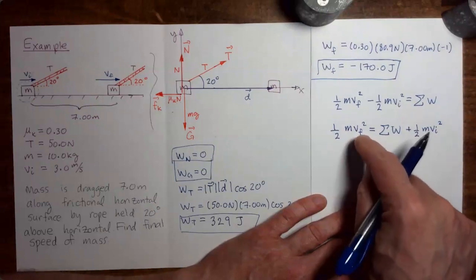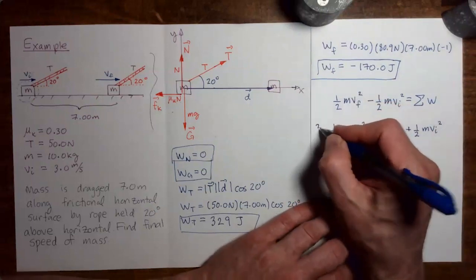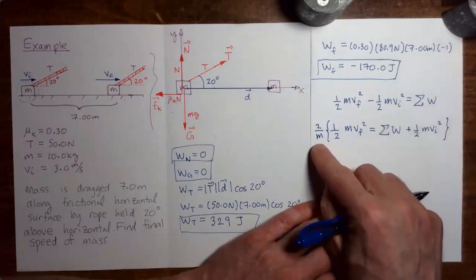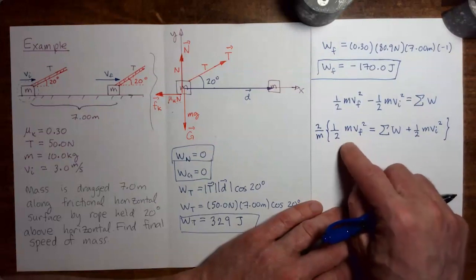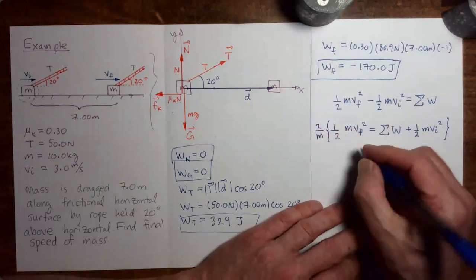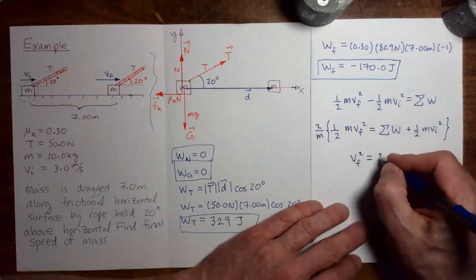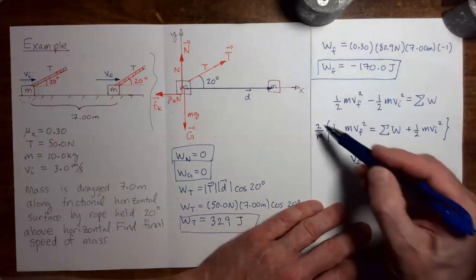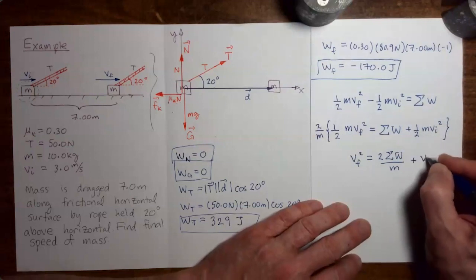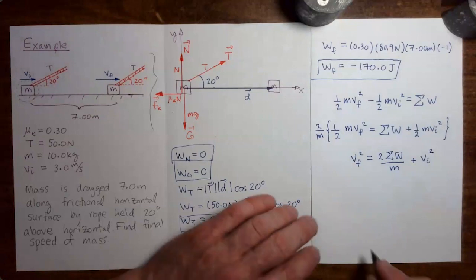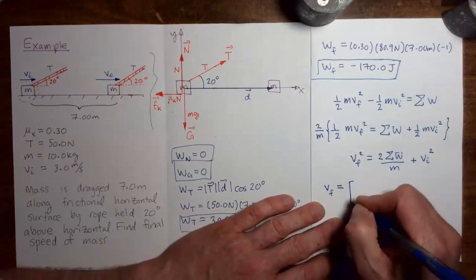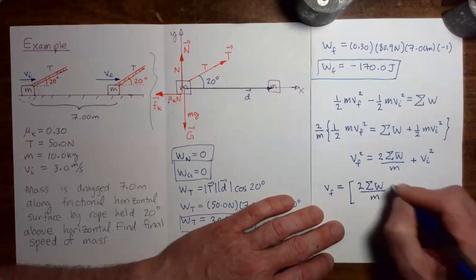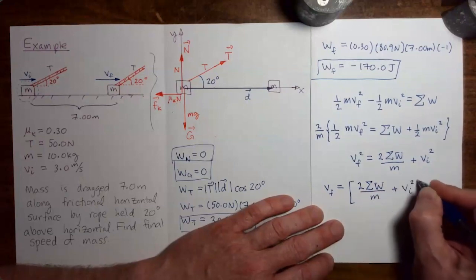To isolate V_final, we multiply through the equation by 2 over the mass. On the left, the factors cancel, leaving V_final squared. On the right, we get 2 times the total work done by all forces over the mass, plus the initial speed squared. Taking the square root of both sides: final speed equals the square root of the quantity 2 times total work done by all forces divided by the mass, plus initial speed squared.